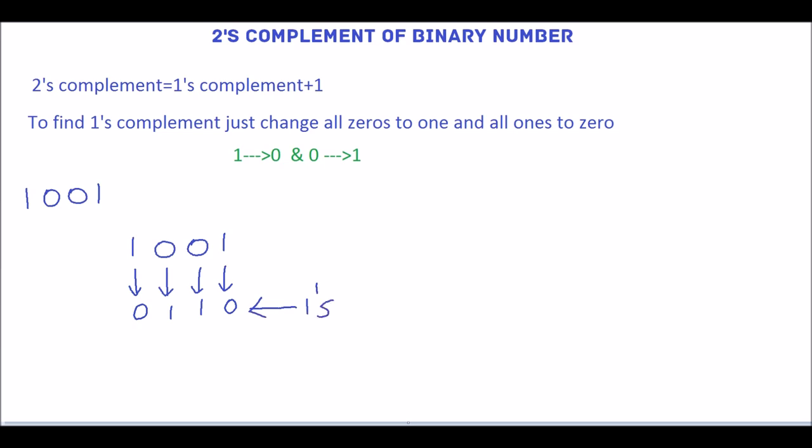To find 2's complement, add 1 with this 1's complement. 0 plus 1 is 1, then 1, 1, 0. This is the 2's complement of the binary number 1001.